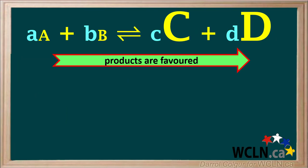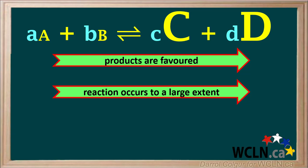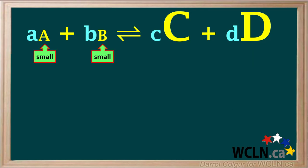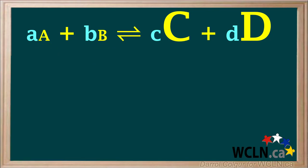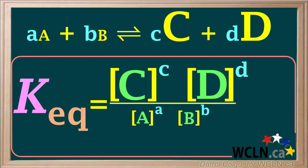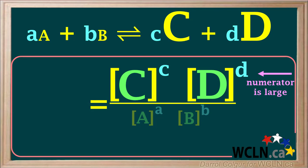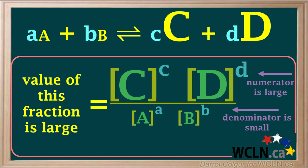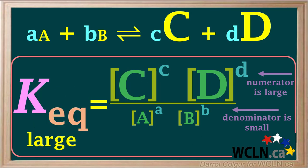If we have a particular equilibrium equation in which the products are highly favored — in other words, the reaction occurs to a large extent — we can represent products C and D with large letters to indicate high concentrations, and reactants A and B with small lettering to indicate low concentrations. Because the numerator is large and the denominator is small, the value of KEQ is large.